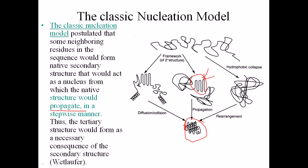This is called propagation because we start by making a nucleus, which is the starting point of the protein. Then we arrange other amino acid sequences onto the nucleus to make the strong and stabilized structure of the protein.